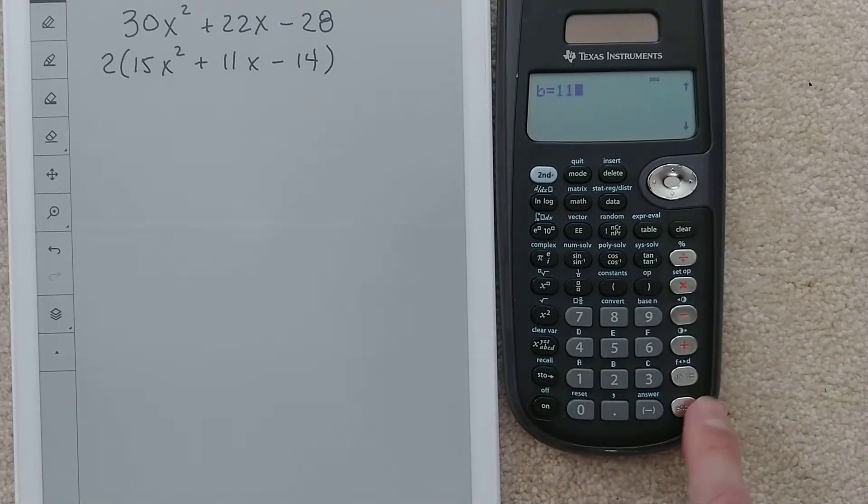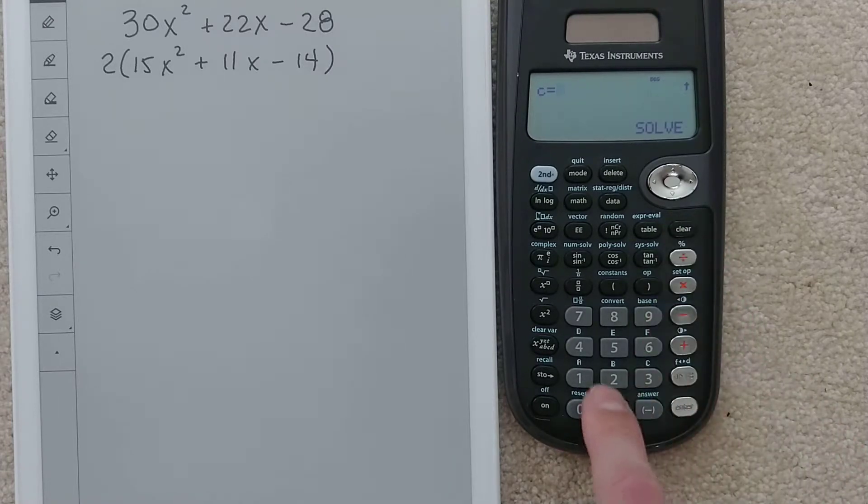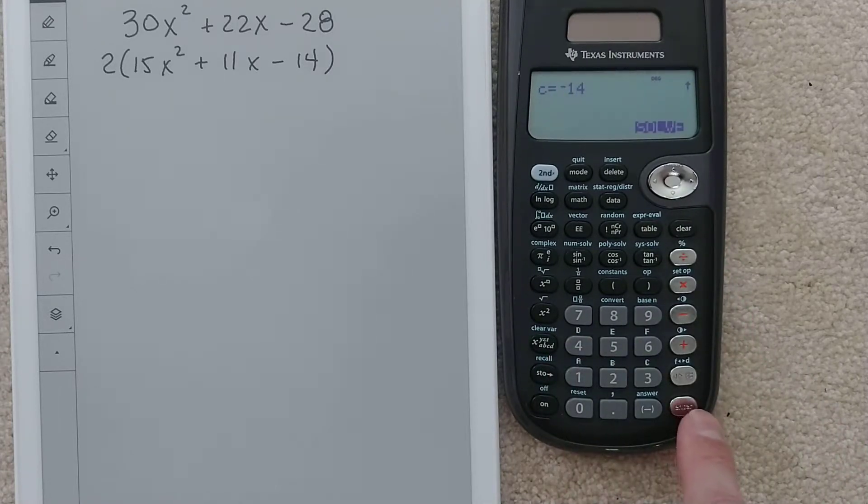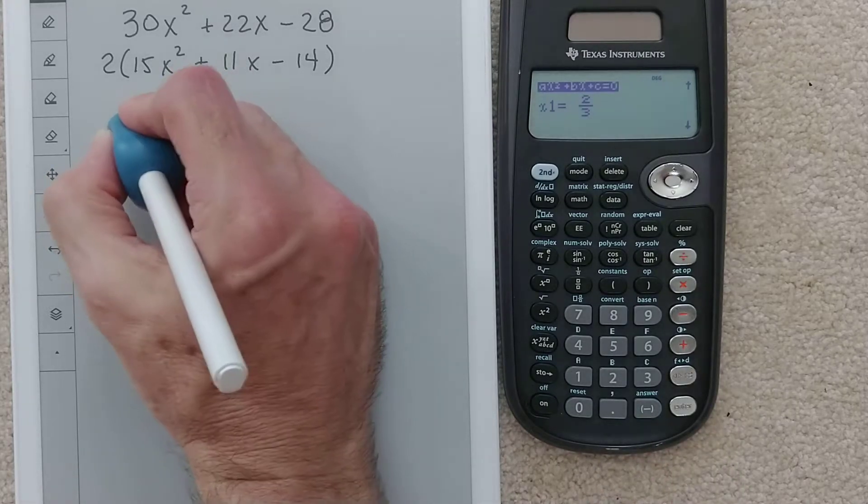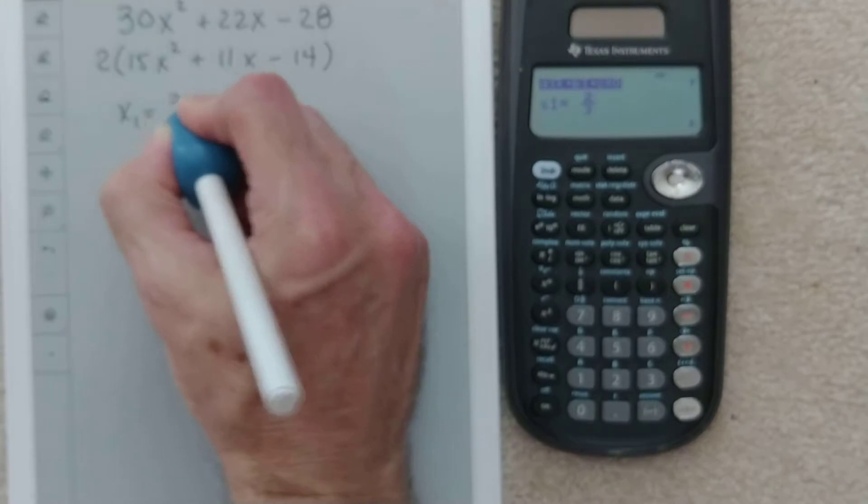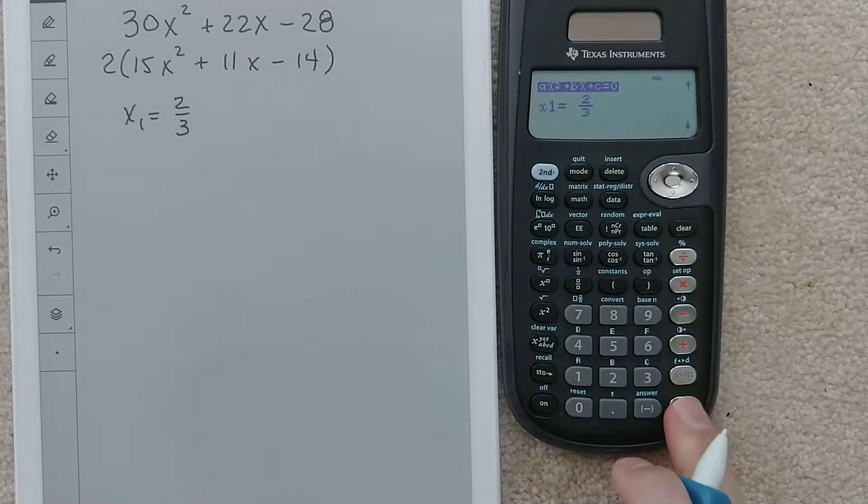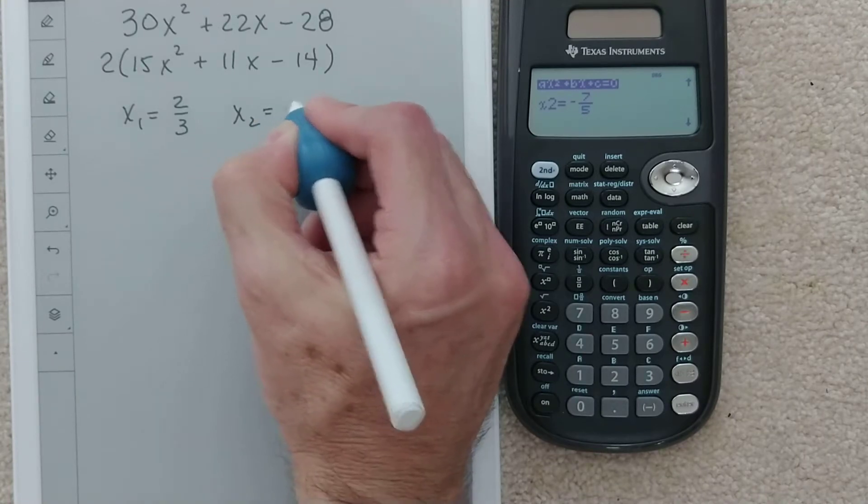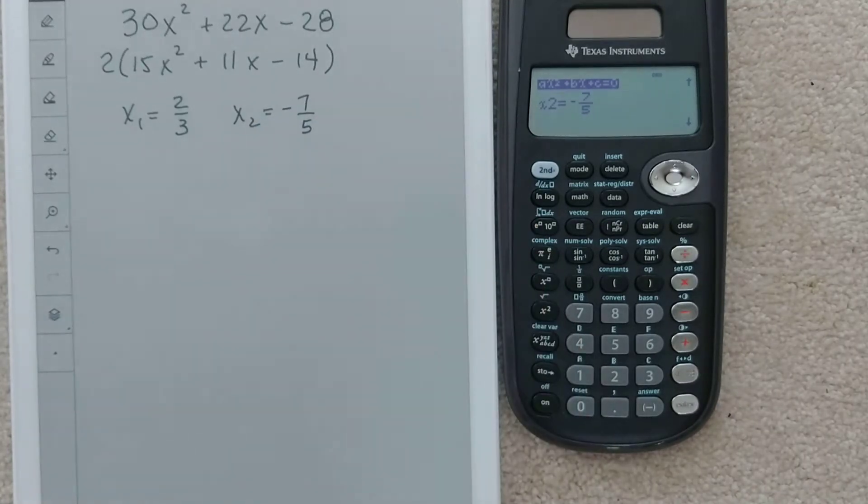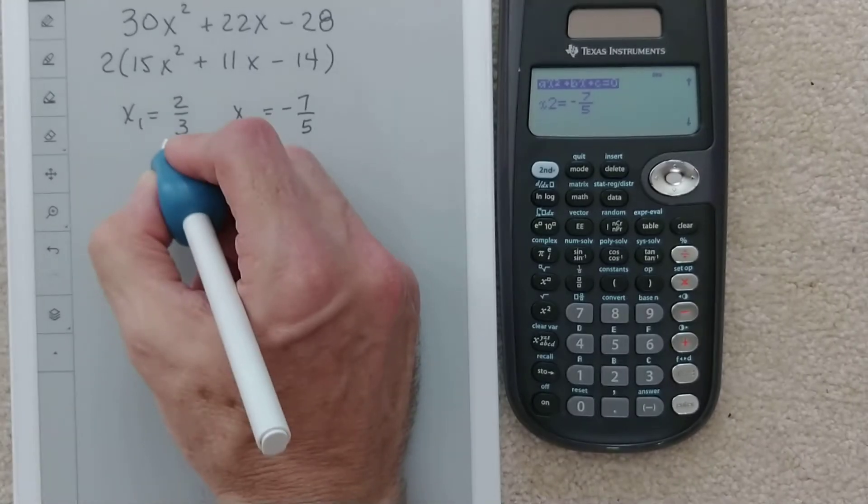Don't worry about the 2, just put the 15 there, enter. Then clear, 11, enter. Clear, negative 14, enter, and then solve. I get two roots: x1 is 2/3, and when I hit enter again, x2 is negative 7/5.